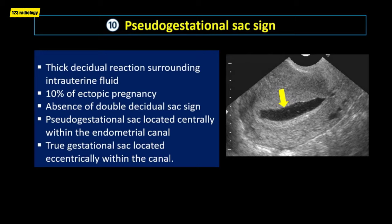A pseudogestational sac represents a thick decidual reaction surrounding intrauterine fluid, which may be blood or secretions. Ten percent of patients with ectopic pregnancy demonstrate a pseudogestational sac. The absence of the double decidual sac sign helps distinguish a pseudogestational sac from a true gestational sac. In addition, a pseudogestational sac is located centrally within the endometrial canal, while a normal gestational sac is located eccentrically.